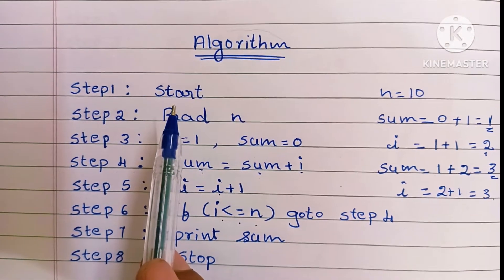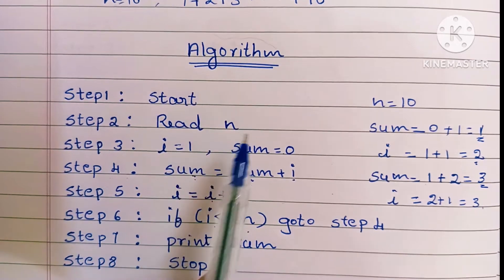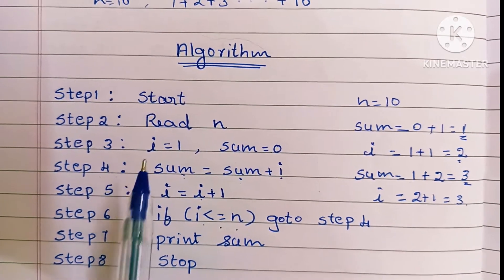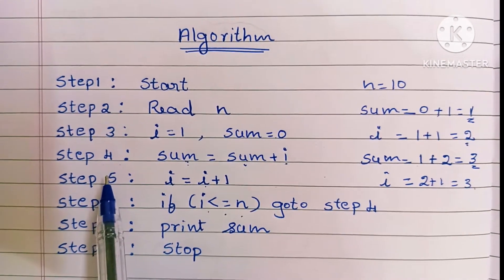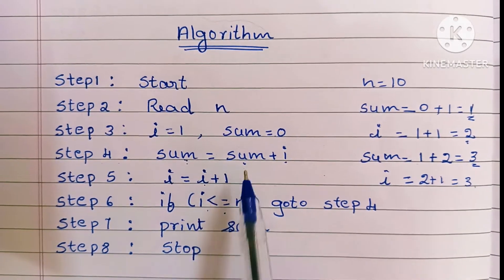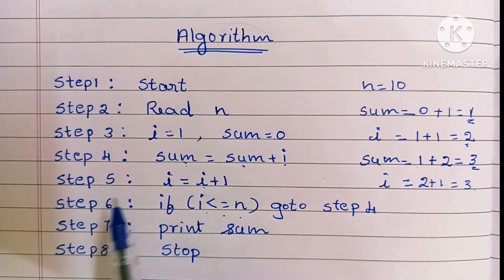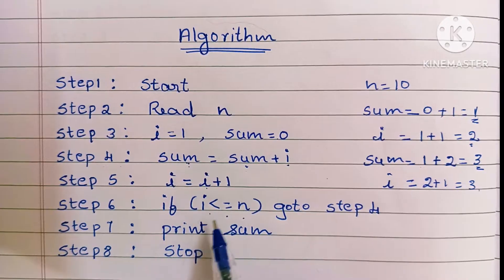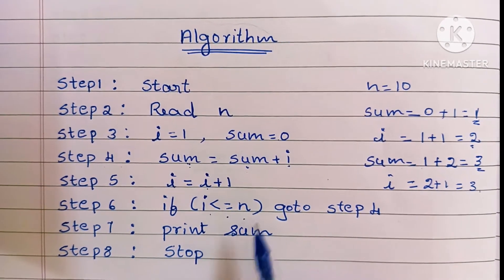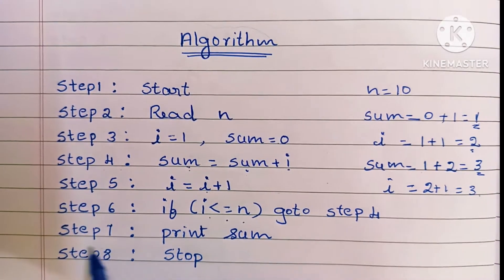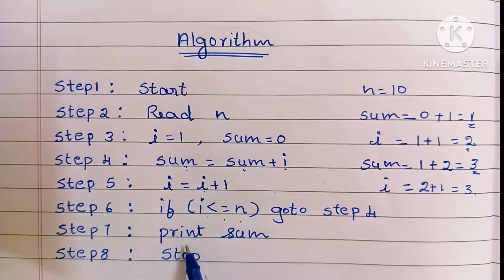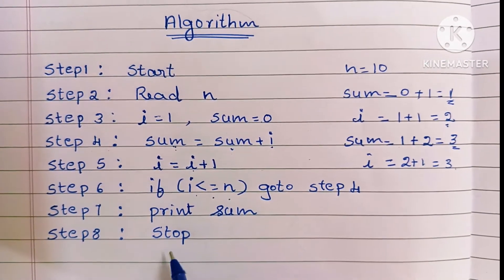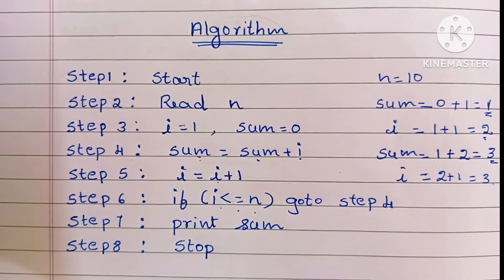To recap the algorithm to find the sum of n natural numbers: Step 1 — start. Step 2 — read n. Step 3 — initialize i equal to 1 and sum equal to 0. Step 4 — calculate sum equal to sum plus i. Step 5 — i equal to i plus 1. Step 6 — check if i is less than or equal to n; if true, go to Step 4; otherwise go to Step 7. Step 7 — print sum. Step 8 — stop.